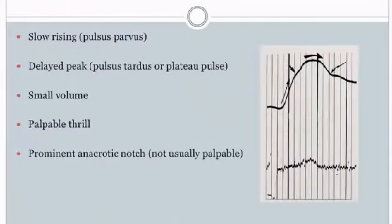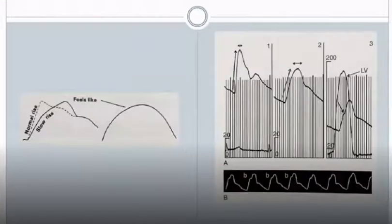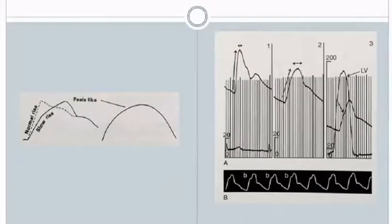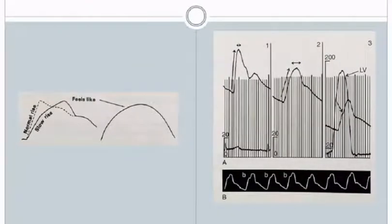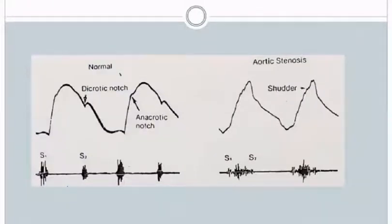The pulse is usually slow rising — pulsus parvus — with a delayed peak — pulsus tardus — and small volume. There is a palpable thrill in the carotids and a prominent anacrotic notch, which is usually not palpable. The left-side diagram shows slow rise of the pulse — pulsus parvus et tardus. A second image shows slow rise with small plateau. A third image and bottom tracing show the anacrotic notch. The carotid pulse tracing in aortic stenosis also shows a carotid shudder.